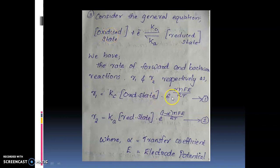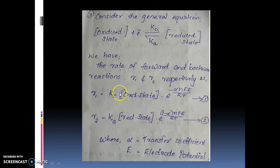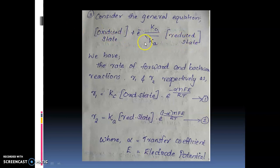The forward reaction rate R1 is equal to kc into the concentration of the oxidized state, into e raised to minus alpha·n·F·E divided by RT. The backward reaction rate R2 is equal to the backward rate constant k into the concentration of the reduced state, into e raised to (1 minus alpha)·n·F·E divided by RT.